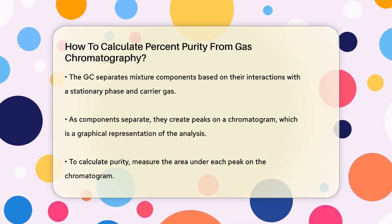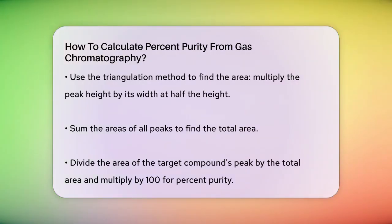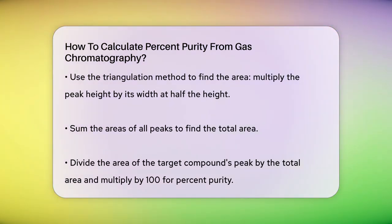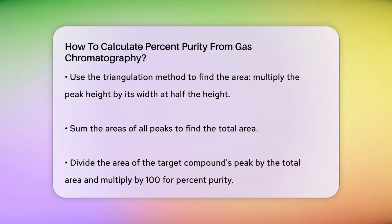Once you have the areas of all the peaks, add them up to get the total area. Then take the area of the peak corresponding to the compound you're interested in and divide it by the total area. Multiply this result by 100 and you'll get the percentage purity of that compound. For example, if the area of the peak for your target compound is 80 and the total area of all peaks is 100, then the purity would be 80%.